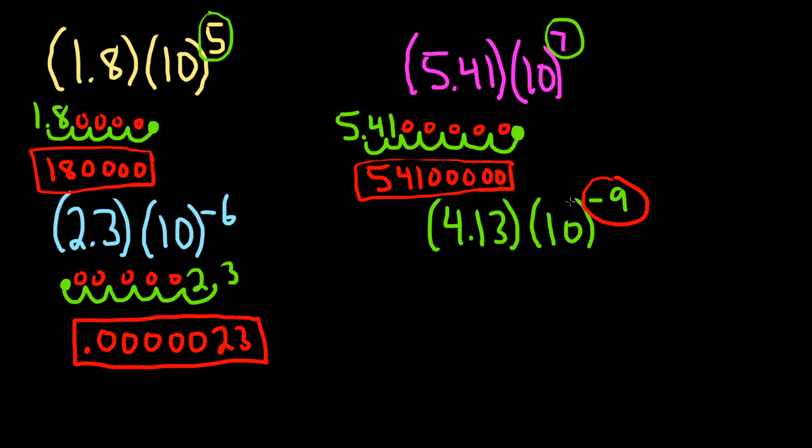This one is negative, so we've got to go to the left nine times from the decimal. So I'm going to write it here. We have to count nine now. So 1, 2, 3, 4, 5, 6, 7, 8, 9.